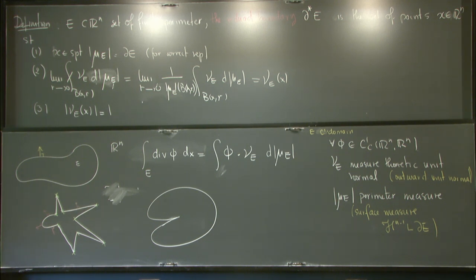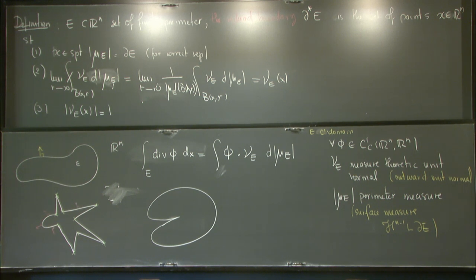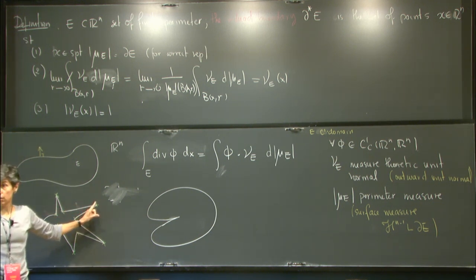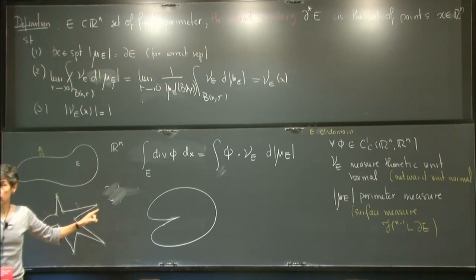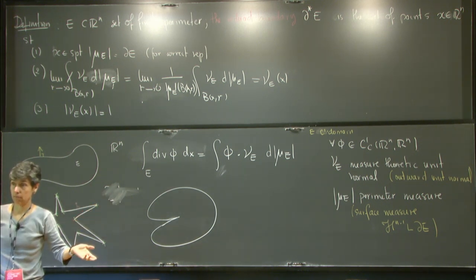A question: since μ_E is defined almost everywhere, is the third condition there to guarantee that we exclude points where the limit exists but equals zero? Yes. It could be that the limit exists — looking at corner points, the limit probably exists and gives some number depending on the angle — but I don't want just any number; I specifically need |ν_E| = 1.